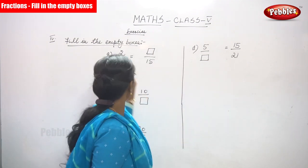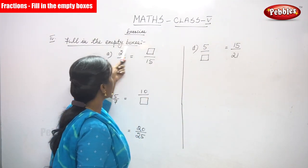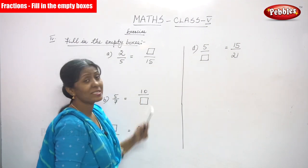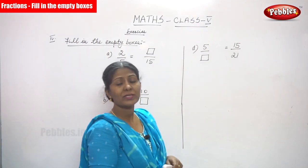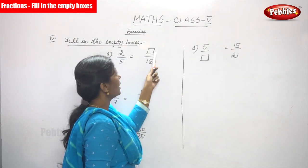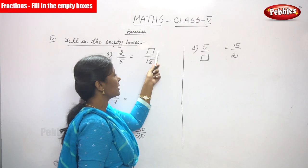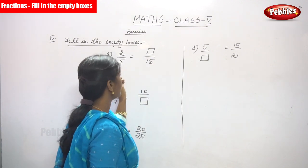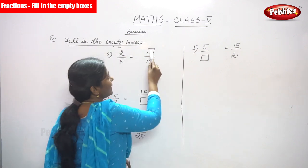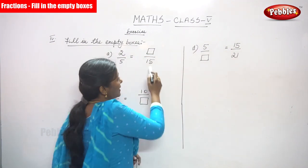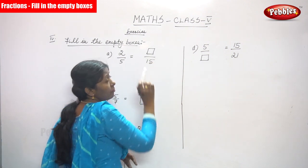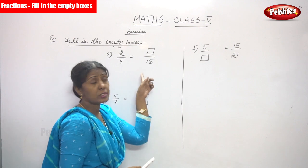Now we are going to see the 'fill in the empty boxes' exercise. The first question is 2 by 5. A fraction is made up of two numbers — numerator and denominator. They have given the denominator, so we have to find out the numerator and write it in the box.